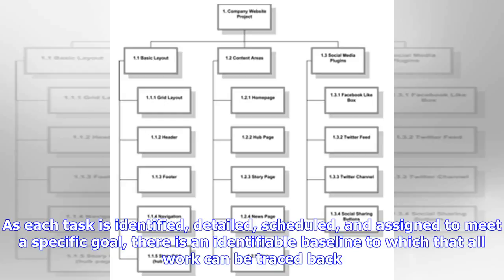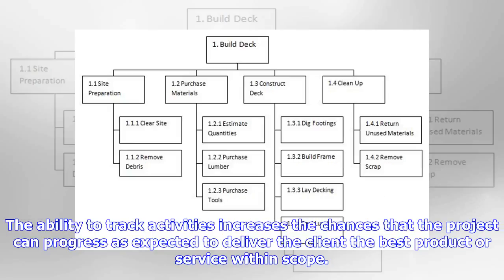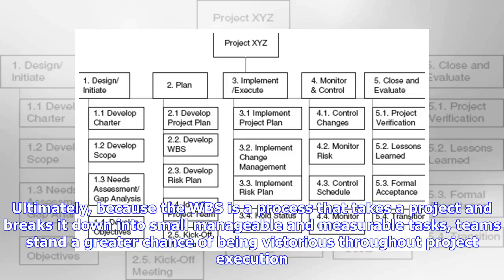It enables tracking of all activities. As each task is identified, detailed, scheduled, and assigned to meet a specific goal, there is an identifiable baseline to which all work can be traced back. The ability to track activities increases the chances that the project can progress as expected to deliver the client the best product or service within scope. Ultimately, because the WBS is a process that takes a project and breaks it down into small, manageable, and measurable tasks, teams stand a greater chance of being victorious throughout project execution.